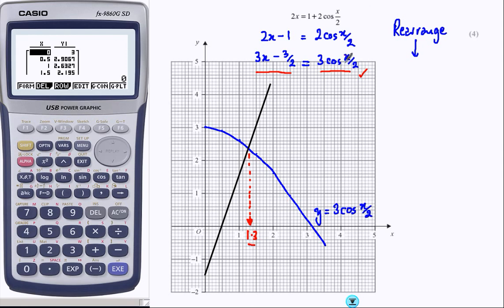So 1.3, this is equal to this, which is exactly the same as the original, and there we go. The graph to solve an equation, using the trick of rearranging to give us what we want. That's it.